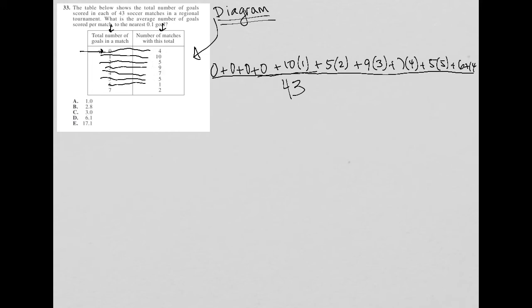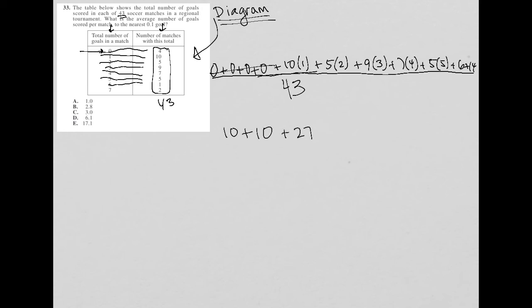These numbers all add up to the 43 that we were given, which is why it's important to pay attention as you read. It's easy to get lost in a question like this — not because most students don't know how to find an average, but because the way the information is provided in the table is not the typical way you'd see it for an average question. So my numerator becomes: 10 plus five times two which is 10, plus 27 from nine times three, plus 28 from seven times four, plus 25 from five times five, plus 20 from six, plus 14 — all over 43.